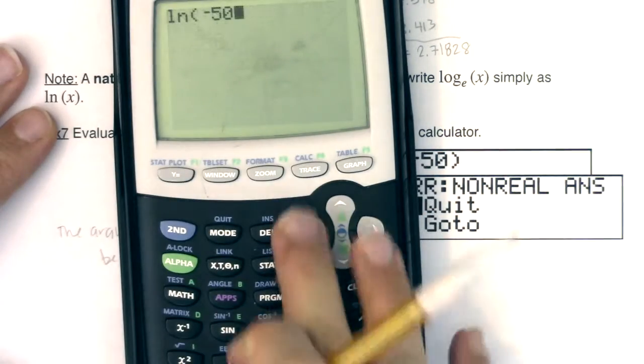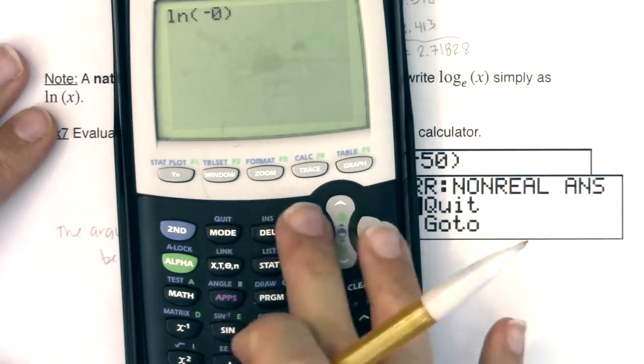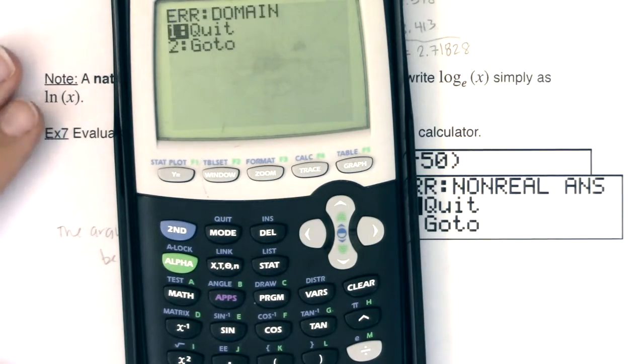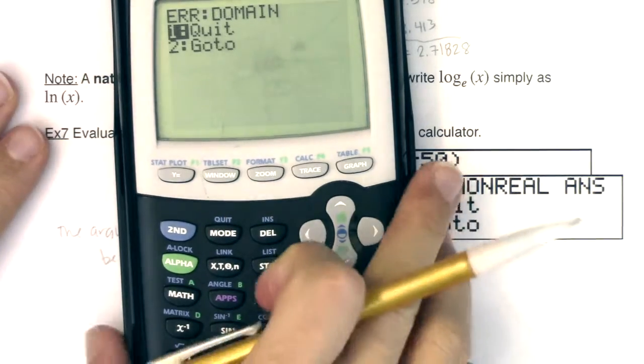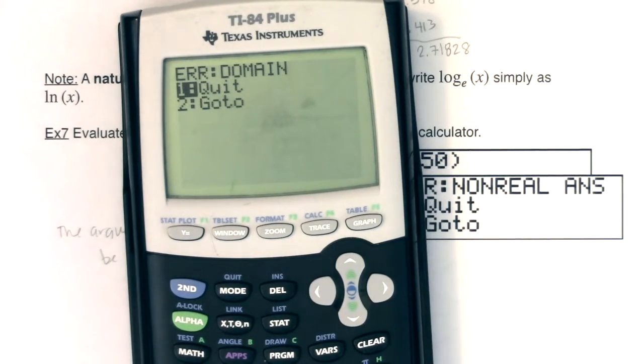So if you tried to do the logarithm, whether it was LN or just common log of zero, you'd still get an error. You'd still get a problem. There's a domain issue.